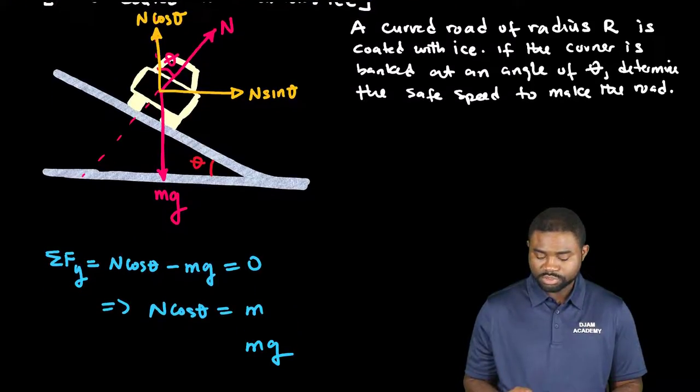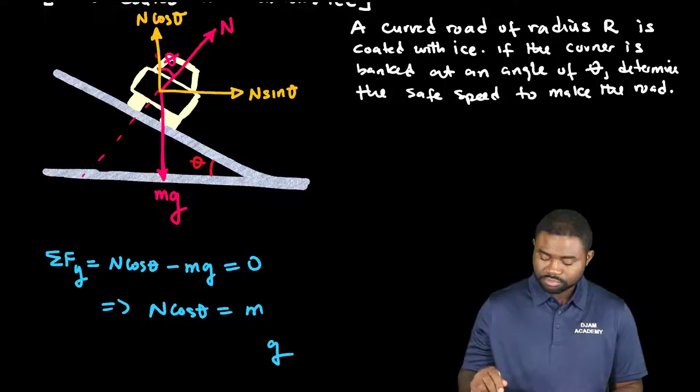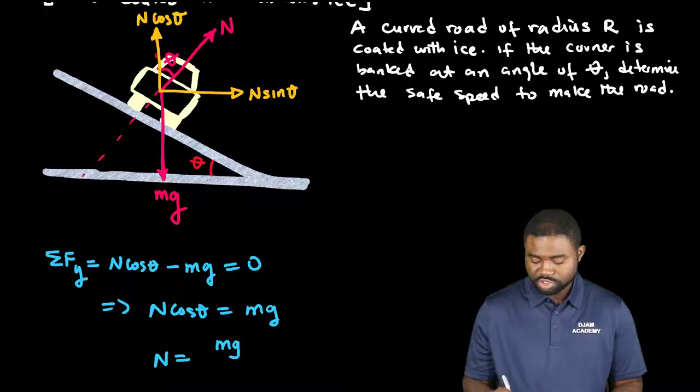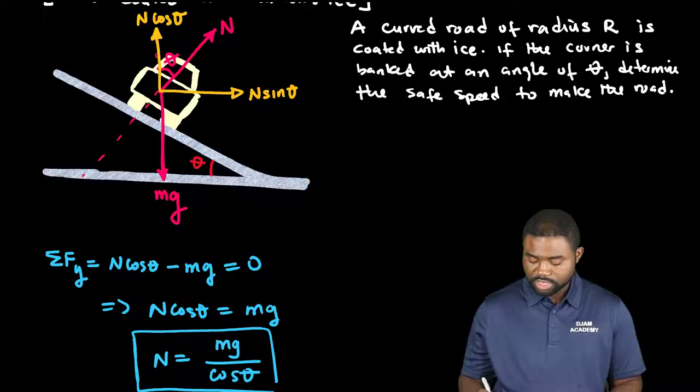In other words, N is equal to mg divided by cosine theta. This is the normal force acting on the curve.